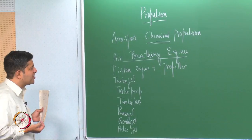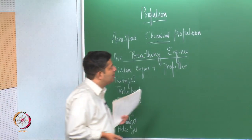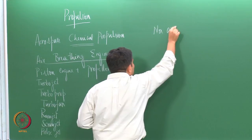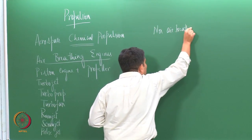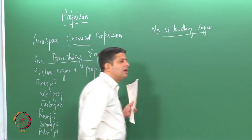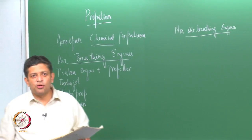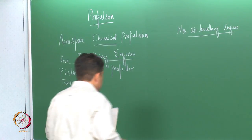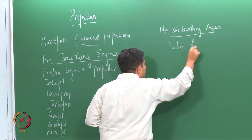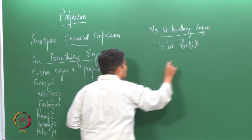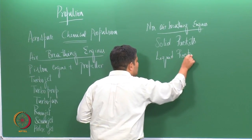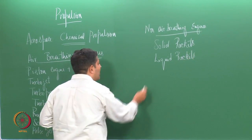These are the systems that we have in air breathing propulsion. We also have something known as a pulse jet, which is very scarce. Let us look at the non-air breathing propulsion systems. These are also known as rocket engines. So you have solid rockets, liquid rockets, and hybrid rockets.